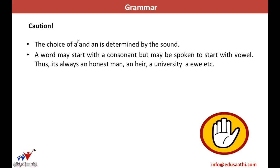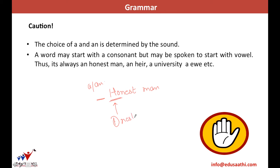Again, consider 'honest man.' I need to determine which article to put — either A or An. I check the pronunciation of 'honest.' It is not pronounced with an H sound; it is pronounced as 'onest,' which is the sound of O. Since it's a sound of O, which is a vowel, I write 'an honest man.' Thus the choice of A or An depends on the pronunciation and not the spelling.